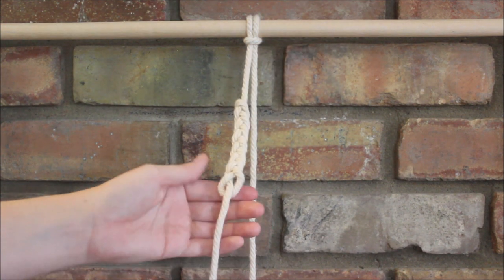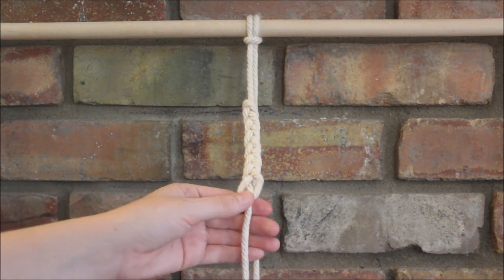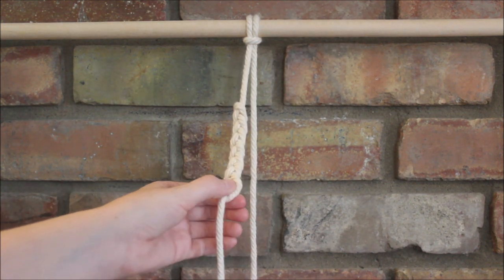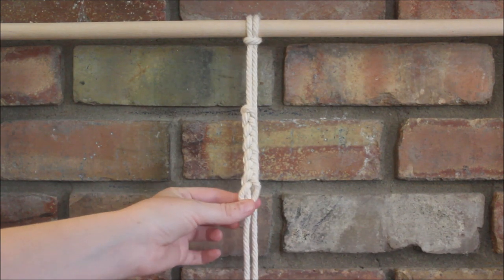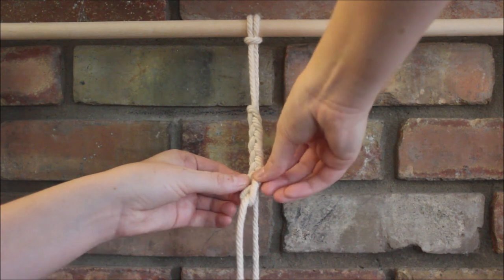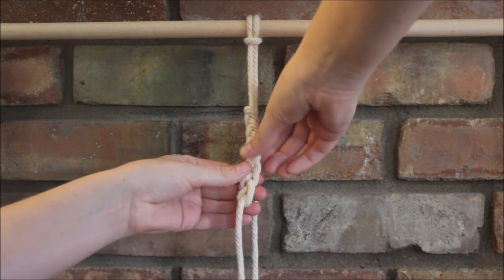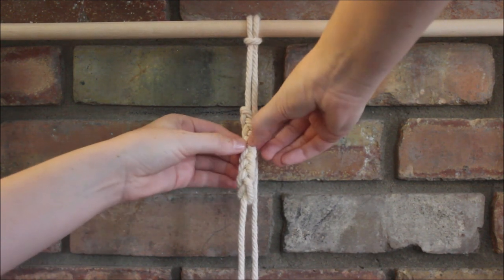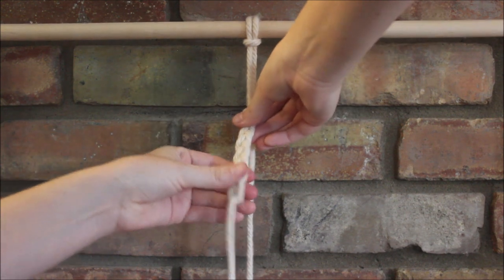And then once you get to the end, you might need to adjust your braid just slightly if you have a little bit of a gap on your last loop, but not enough to do another twist and pull through. And so just go through and kind of loosen up your braid to fill in the gap.